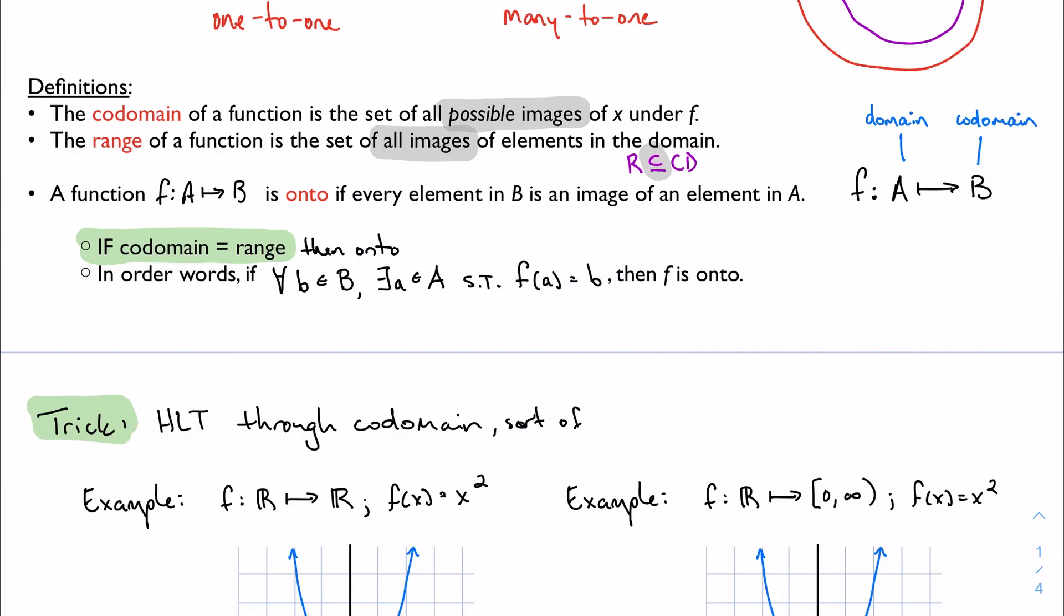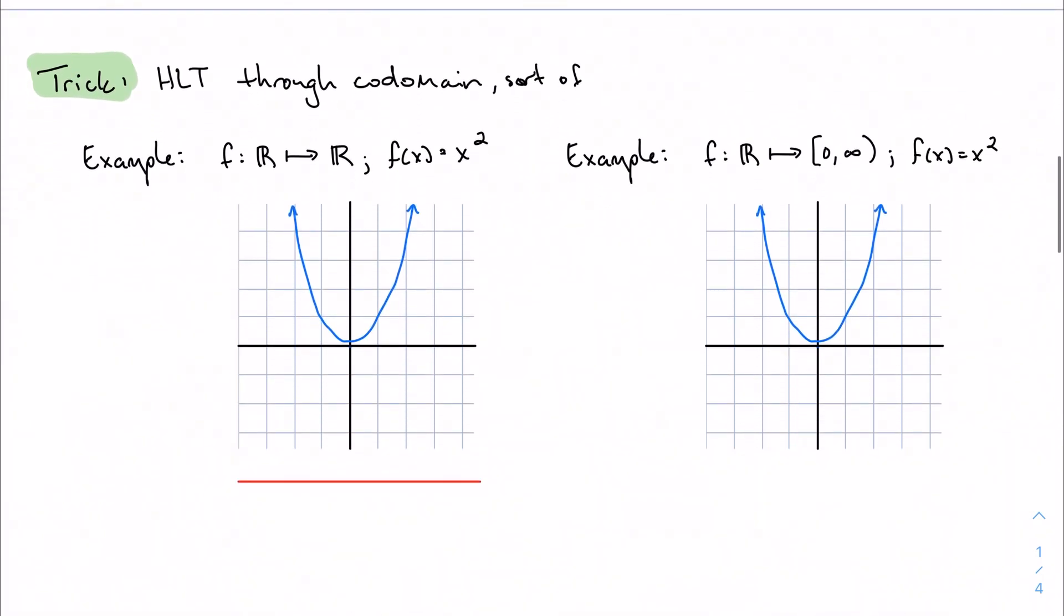It's just to say, if for every single element in B, for all B in the codomain, I can find, or there exists, an A in the domain such that f(A) is B. So for every single element in B, I can find an element in the domain such that f of that element A gives me B, for every single one. Then it's onto.